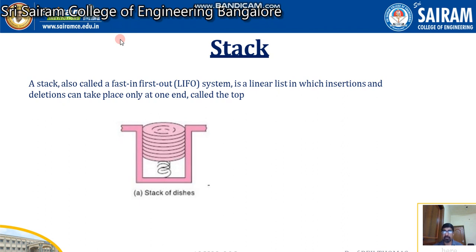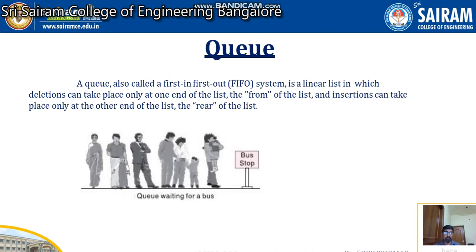Next is queue. This is a common scenario — wherever you go, queues are seen right from our beginning. Queue follows first in first out, or first come first serve. In the picture a group of people are standing in a queue. Whoever comes first will be served first. This is another way of storing data.